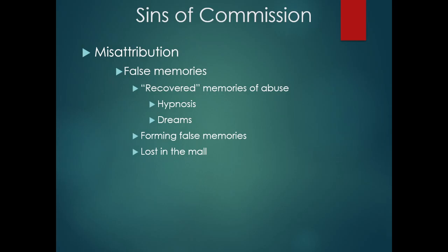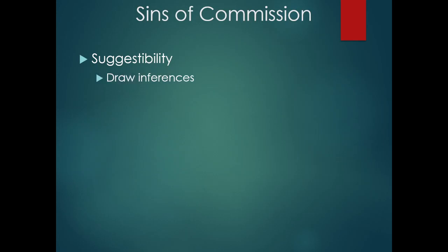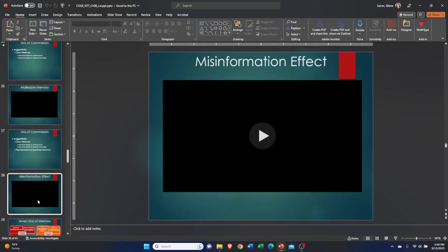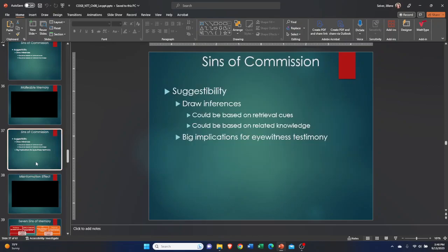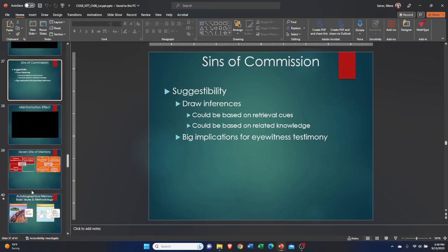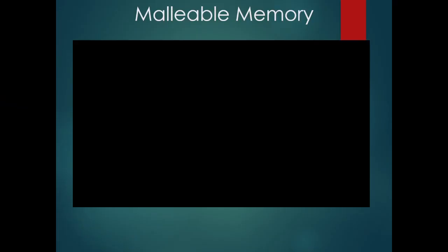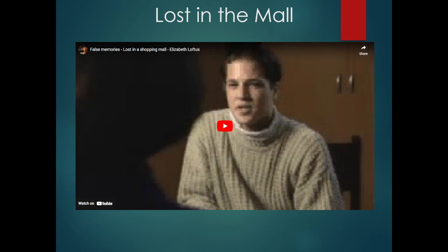One of the ways Elizabeth Loftus discovered that people will expand upon things that never happened to them — but start to internalize and believe really did happen — was through a study she called the Lost in the Mall study. I have that queued up next in the playlist. When we store and retrieve memories, we can inadvertently create false memories, and the Lost in the Mall study illustrates this well. That's where we'll leave off, and then we'll come back to talk about suggestibility in the next lecture.